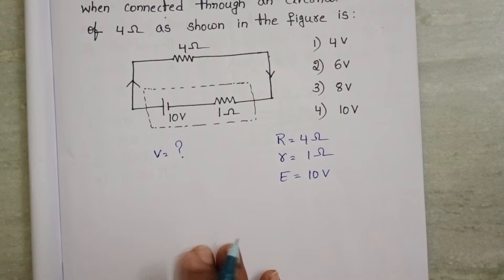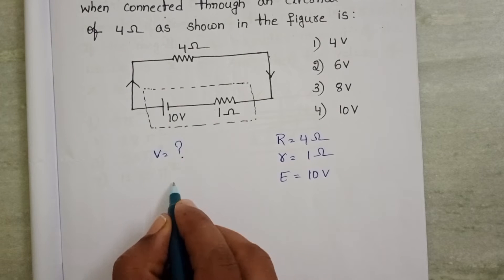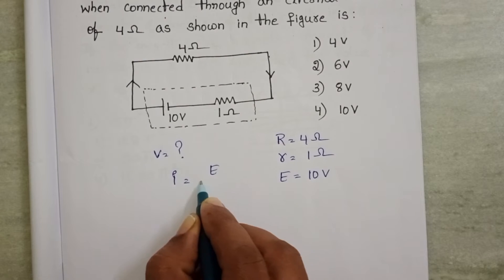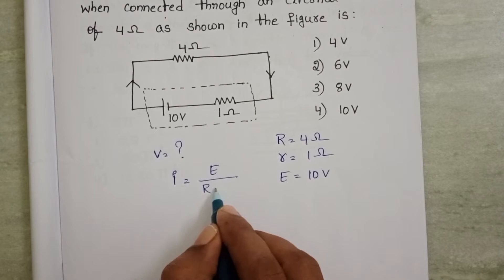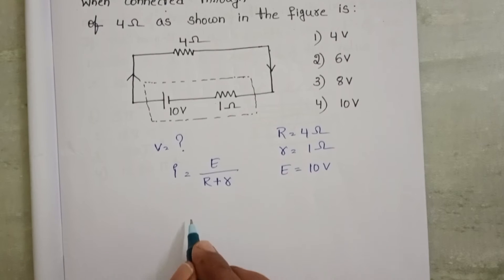First of all, find out the current passing through the circuit. I equals EMF of the battery by total resistance of the circuit: external resistance plus internal resistance.